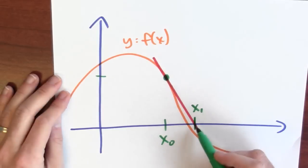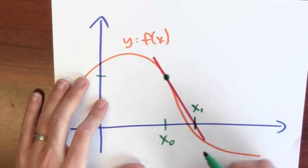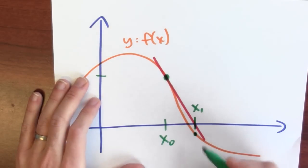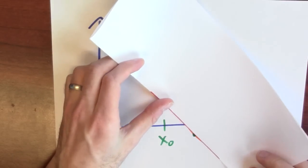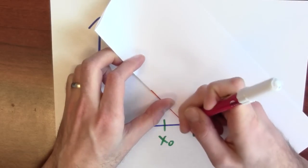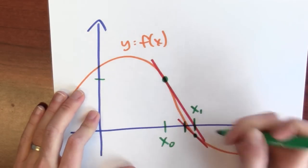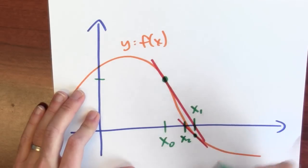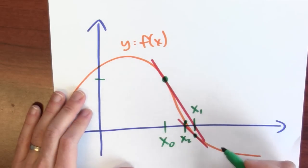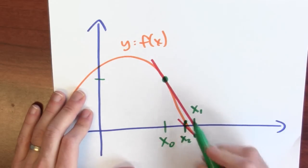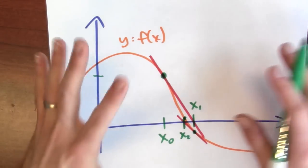After making that first guess, Newton tells us to draw the tangent line to the curve through that point. My next guess will be wherever that tangent line crosses the x-axis — that's x sub 1, and I just hope that that next guess is better. I could repeat the process: this point is closer to 0, so I draw another tangent line to the curve through that point. The next place that tangent line crosses the x-axis is x sub 2, and from this picture it looks like an even better guess.